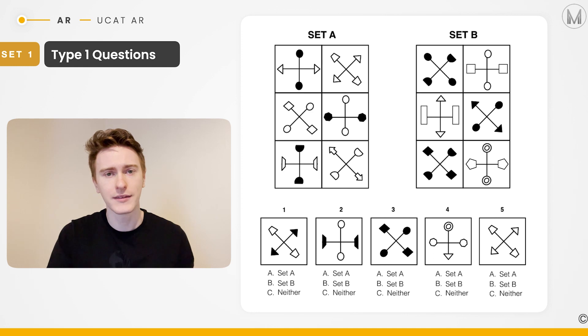If we work through our test shape examples, number one has a cross shape orientation with a mixed black and white picture. This doesn't belong to set A because set A requires a plus orientation for that kind of pattern. And set B has no mixture of black and white. So this belongs to neither.